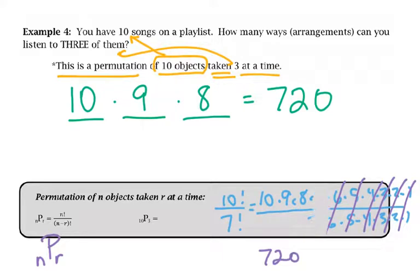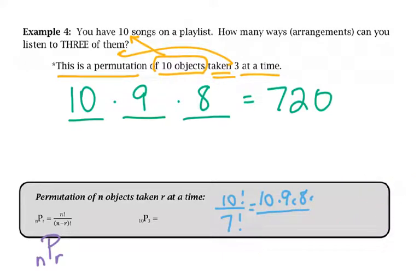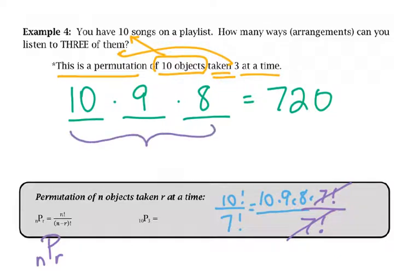Another way to do that is to write 10 times 9 times 8 times 7 factorial over 7 factorial and then just cancel. We use permutations when order matters, and depending on how many things we want to set up, that determines the second number.